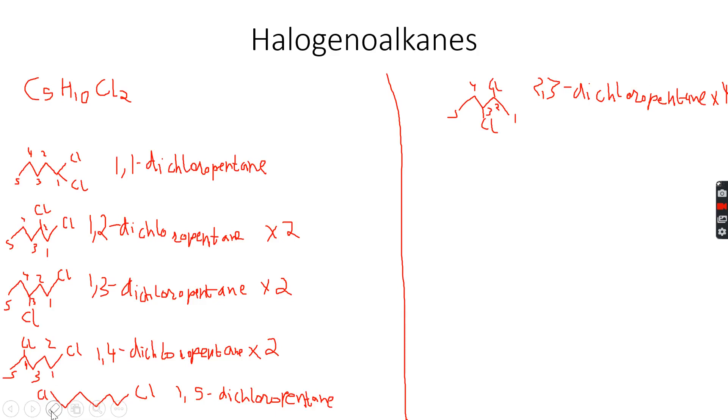So in total there will be 4 stereoisomers for this one molecule. For this one structural formula there will be 4 stereoisomers because 2 plus 2 is 4.